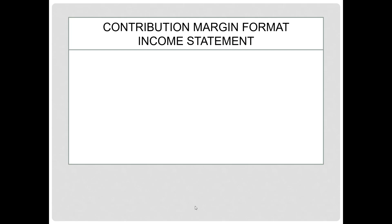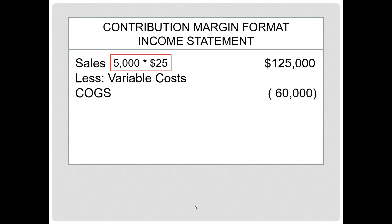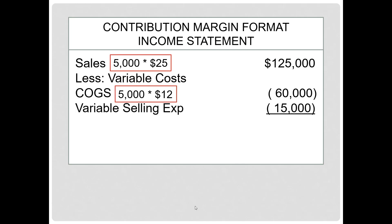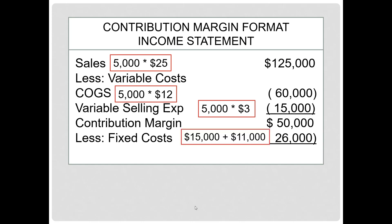Now for our computations. Sales will be $125,000 — that's 5,000 units times $25 per unit. Variable costs: cost of goods sold is $60,000, determined by taking 5,000 units times $12 per unit. Variable selling expense will be $15,000 — that's 5,000 units times $3 per unit. The contribution margin is $50,000. Fixed costs will total $26,000, remaining constant at $15,000 and $11,000. Net income is $24,000.